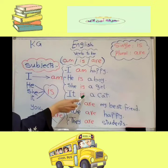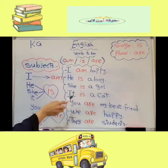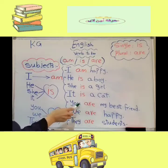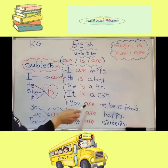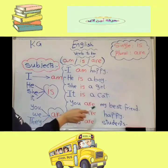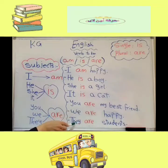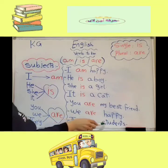It takes is — it is a cat. You takes are — you are my best friend. We takes are — we are happy. They takes are — they are students.